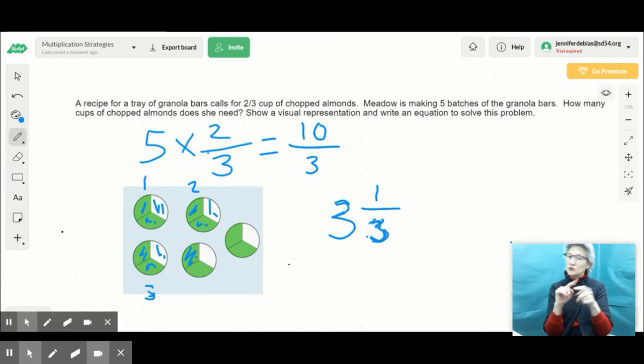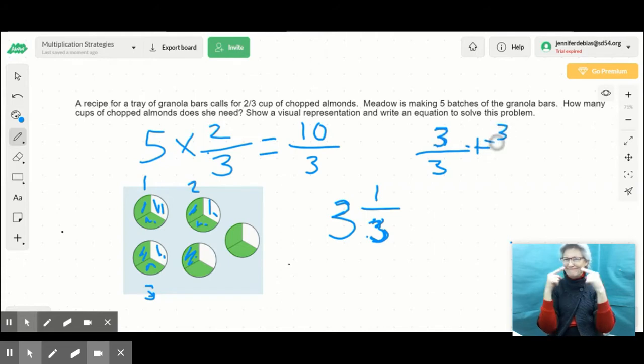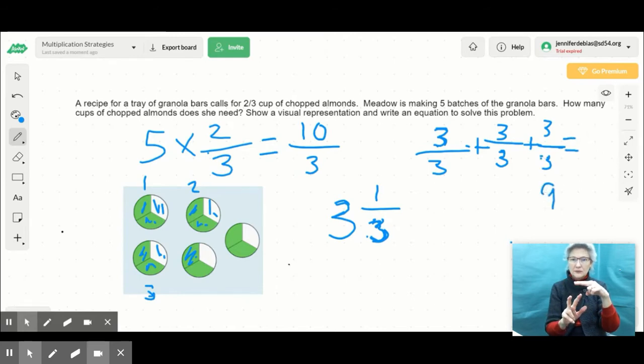What else I could have done is I could have thought, well, 3/3 is one whole. So 3/3 plus 3/3, that gives me 6/3, plus 3/3 to get 9/3. Right? So that's like 3 wholes. And I could even say, okay, that's 9/3. Write it down here. 9/3.